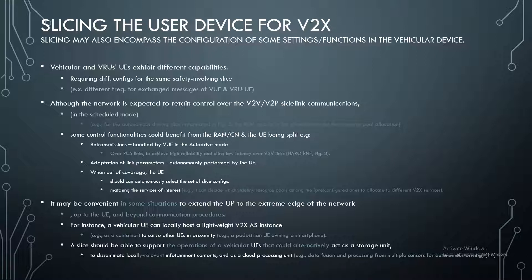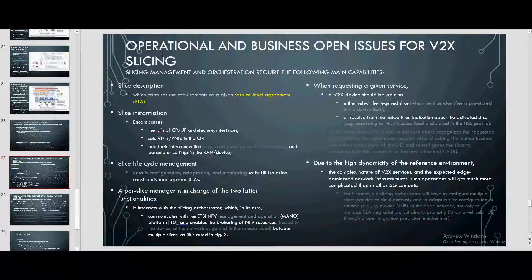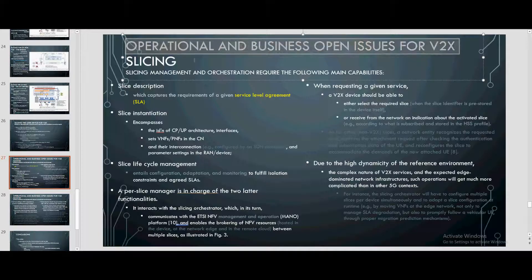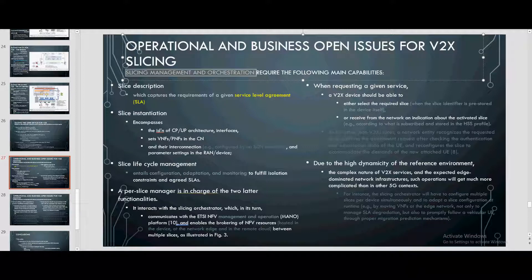Adaptation of link parameters is autonomously performed by the UE. When out of coverage, the UE should be able to autonomously select the set of slice configurations to match the services of interest. It may also be convenient to extend the application to the extreme edge of the network. For instance, a vehicular UE can locally host a lightweight V2XAS instance to serve other UEs in proximity, and a slice should be able to support UEs acting as a storage unit to disseminate local infotainment contents and as a cloud processing unit.